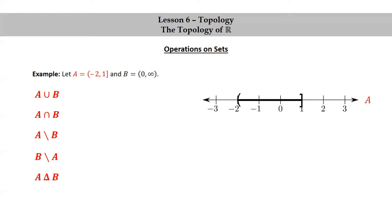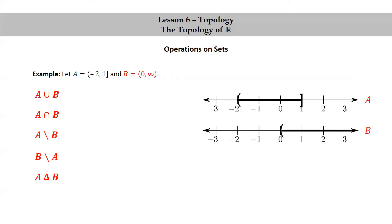Here's a graph of A. Notice it's the half-open interval from negative 2 to 1. So we draw an open parenthesis at negative 2 and a closed bracket at 1, and we shade in between. And for B, we have the open interval from 0 to infinity. So we put an open bracket at 0, and we shade to the right of it, going off to infinity.